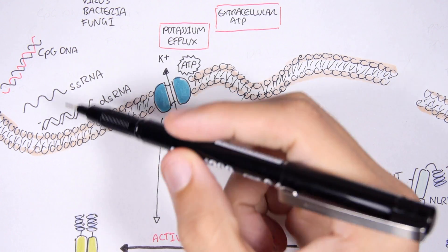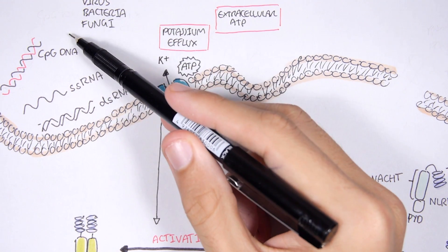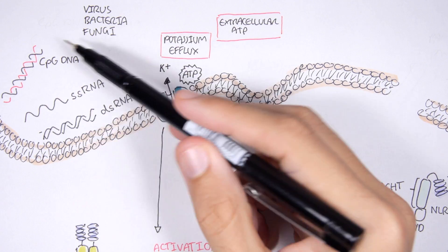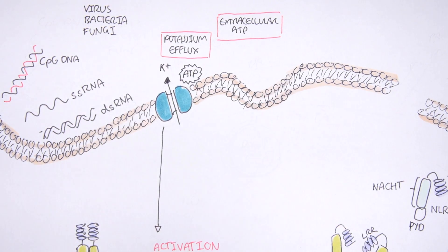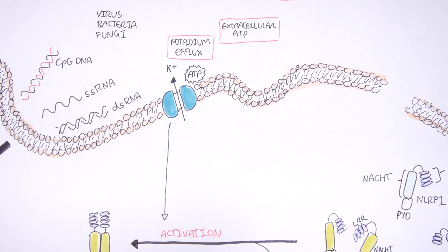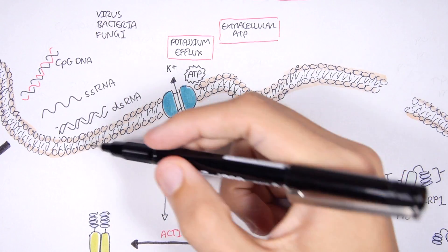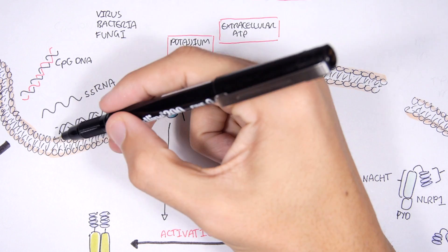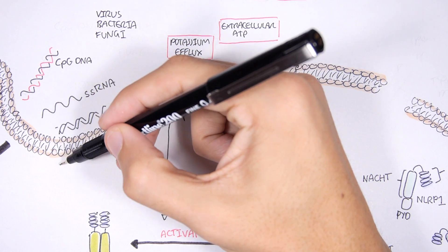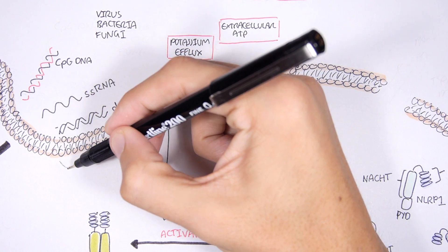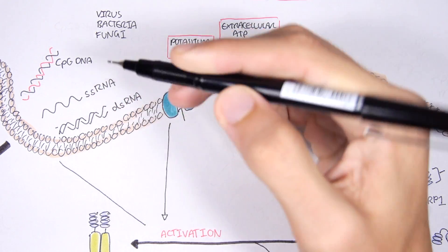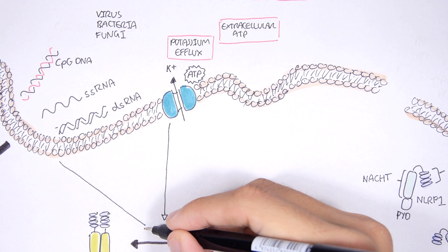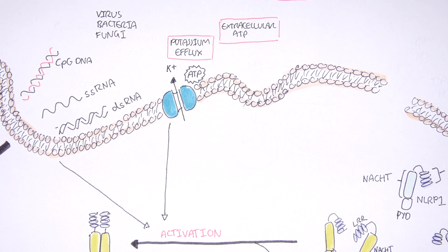Pathogen-associated molecular patterns, or genetic material of pathogens — such as DNA, single-stranded RNA, and double-stranded RNA — can stimulate the activation of NLRP3.